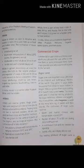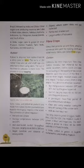Sandy, silty and clay soils are suitable. The leading producer of sugarcane is Brazil, followed by India and China. Other sugarcane producing countries include Cuba, Mexico, Pakistan, Australia, Indonesia, Fiji, Philippines, Hawaii and South Africa. In India, sugarcane is grown in Uttar Pradesh, Andhra Pradesh, Tamil Nadu, Karnataka and Maharashtra.